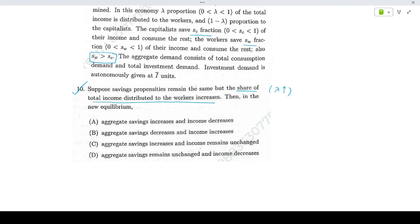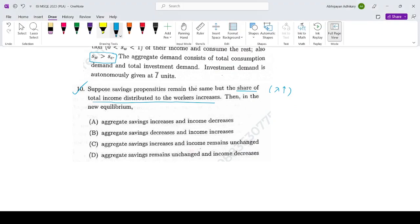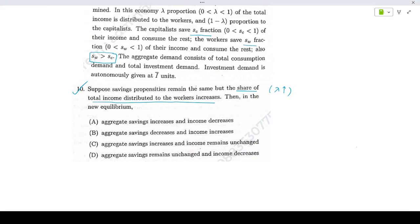First of all, let's recalculate our equilibrium incomes once more. Let me write down the information once more. Workers attribute to getting lambda proportion of the income. Capitalists attribute to getting 1 minus lambda Y proportion of the income.